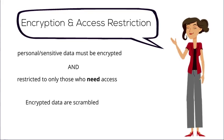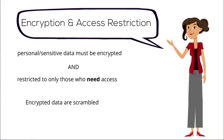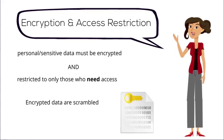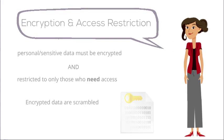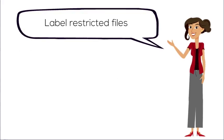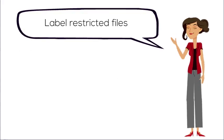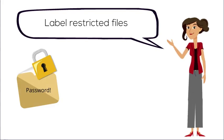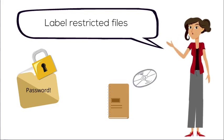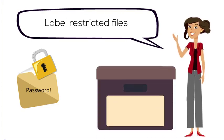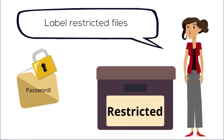Encrypted data are scrambled so that only users who possess an encryption key or password will be able to use, read, and/or decipher them. Restricted files should be clearly labeled. One option is to create a folder for restricted files and password protect it. Non-digital items such as notebooks, DVDs, or photographs should have a restricted label or stamp clearly placed on the outside packaging.